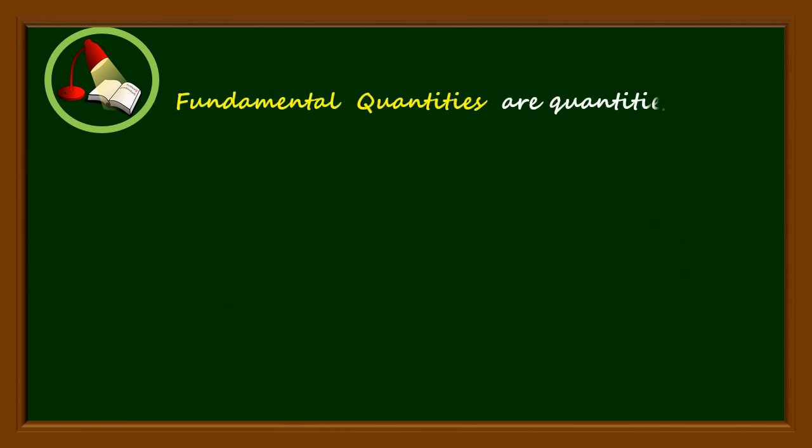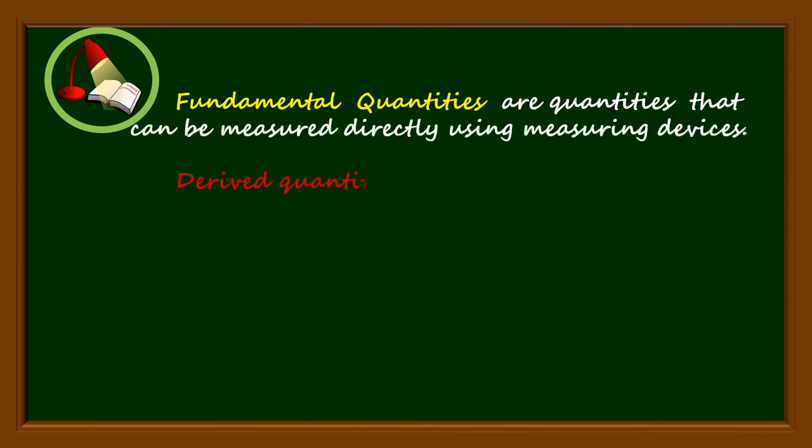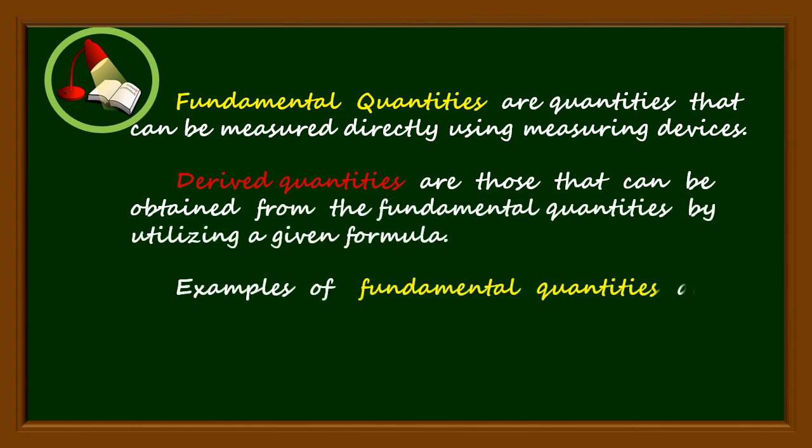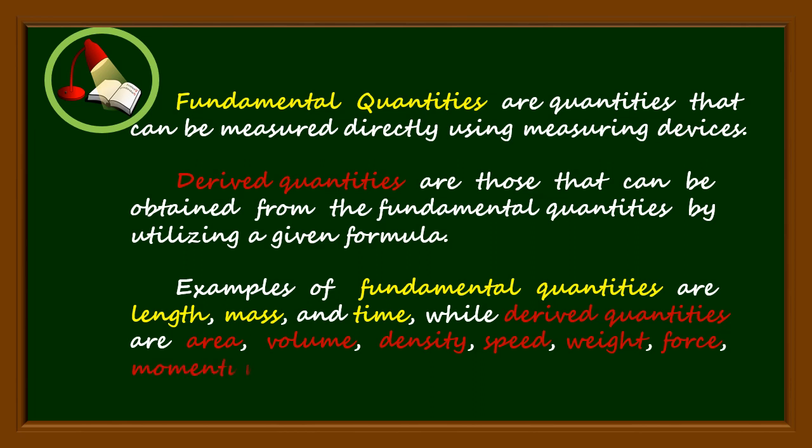Fundamental quantities are quantities that can be measured directly using measuring devices. Derived quantities are those that can be obtained from the fundamental quantities by utilizing a given formula. Examples of fundamental quantities are length, mass, and time, while derived quantities are area, volume, density, speed, weight, force, momentum, power, and many others.